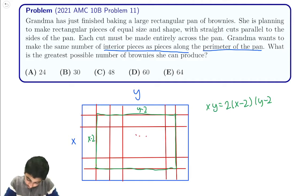Then we simplify this. Expanding that out: (x-2)(y-2) equals xy minus 2x minus 2y plus 4.